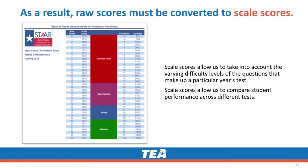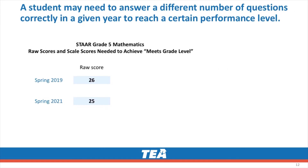As a result, raw scores must be converted to scale scores. Scale scores allow us to take into account the varying difficulty levels of the questions that make up a particular year's test. Scale scores allow us to compare student performance across different years of the same test. Each year, we produce a chart that shows each raw score and its equivalent scale score. This is why a student may need to answer a different number of questions correctly in a given year to reach a certain performance level.